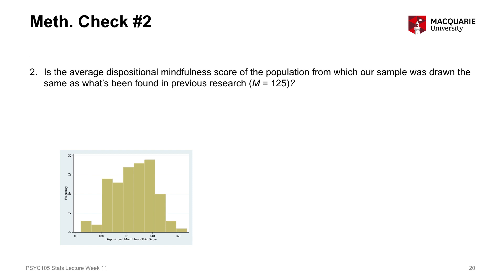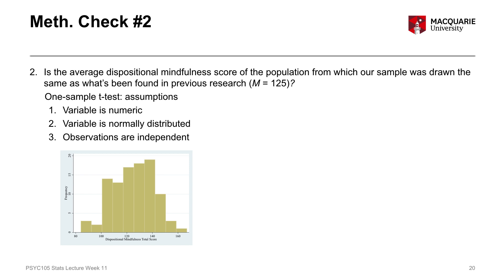Our second methodological check is to see if the average dispositional mindfulness score equals 125. We can see the distribution of dispositional mindfulness, and we know the one-sample t-test is the appropriate test here. The one-sample t-test has three assumptions: the variable is numeric, it is normally distributed, and observations are independent. We can already confirm assumption one and three — dispositional mindfulness is numeric, and our observations are independent, just as in the previous test.